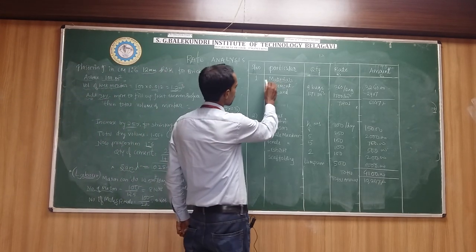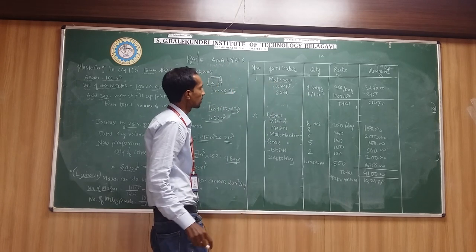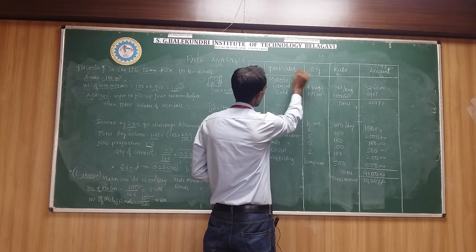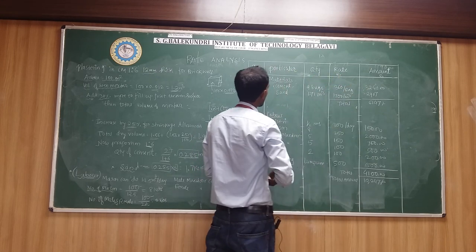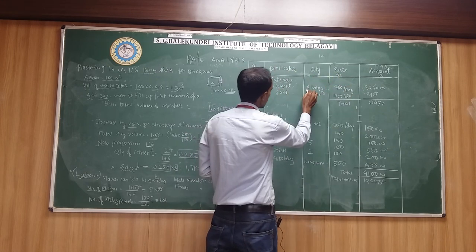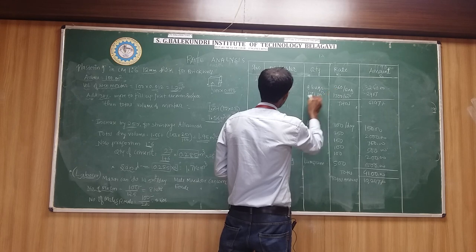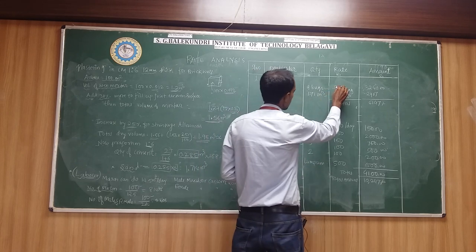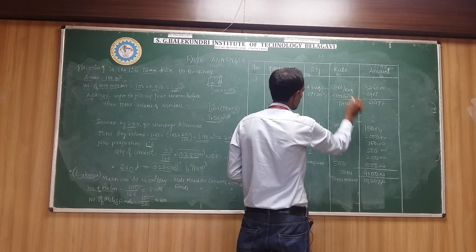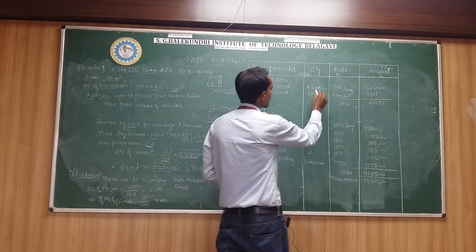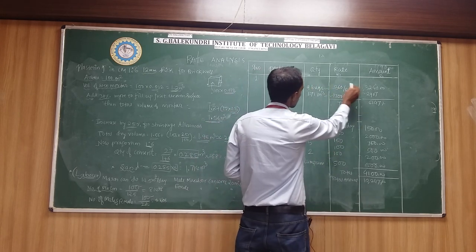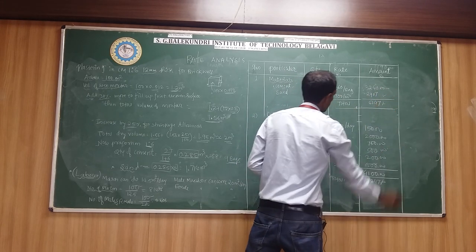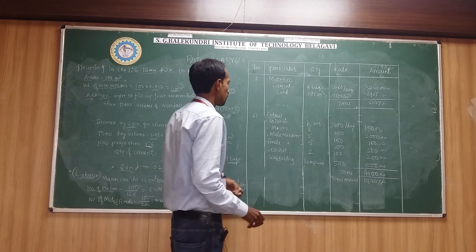For material calculations, we draw a tabular column with serial number, particular, quantity, rate, and amount. Cement is 9 bags and sand is 1.71 meter cube. Multiplying by their rates — 360 rupees per bag and 700 rupees per meter cube — the total amount of material comes to 6147 rupees.